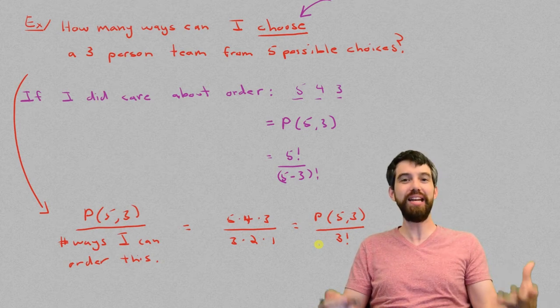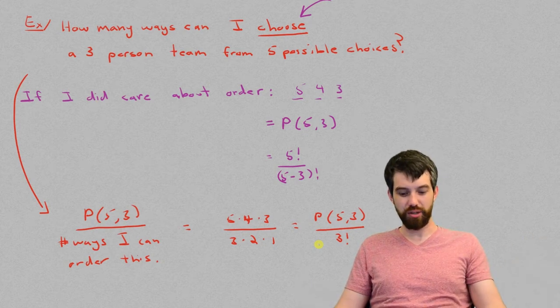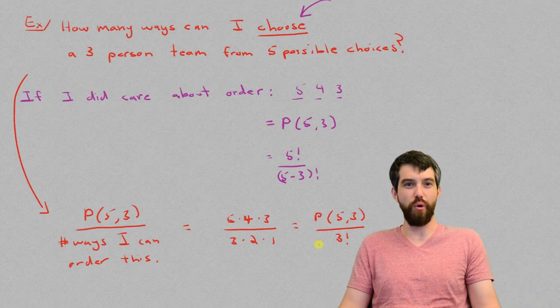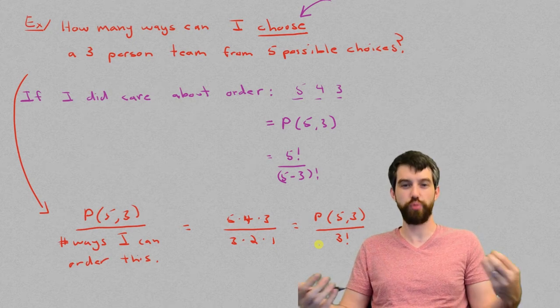So I think of this as picking is something where order matters, so I can do that computation first that we've seen before, and then I don't care about order, so I divide out by the number of ways to reorder it.